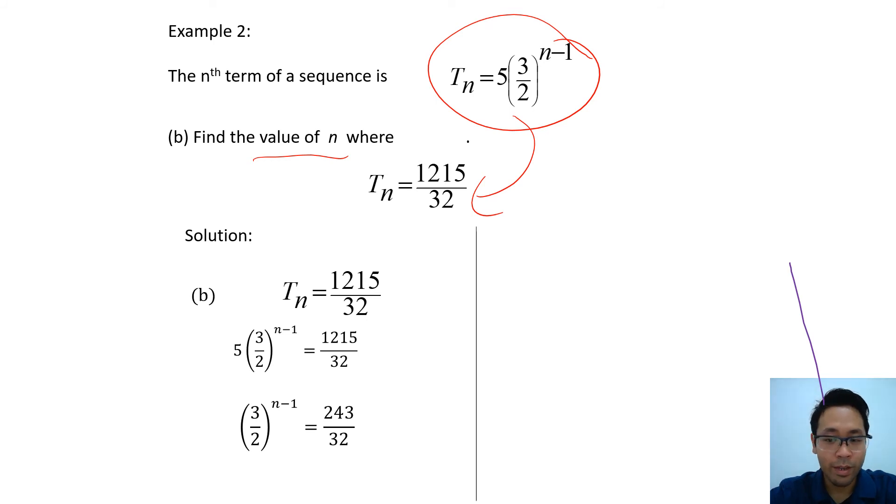You can solve it either this way by using log or you can figure out that 243 is 3 power 5 and 32 is 2 power 5. So from there, you can compare these two. So you get yourself that, and it's equal to 6.